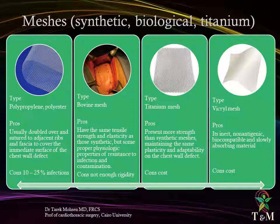However, bovine mesh cannot provide enough rigidity for chest wall stability, even if tightly stretched. Titanium mesh presents more strength than synthetic ones while maintaining the same plasticity and adaptability on the chest wall defect; however, it is very expensive. Vicryl mesh is inert, non-antigenic, biocompatible, and slowly absorbable; however, it is also expensive.